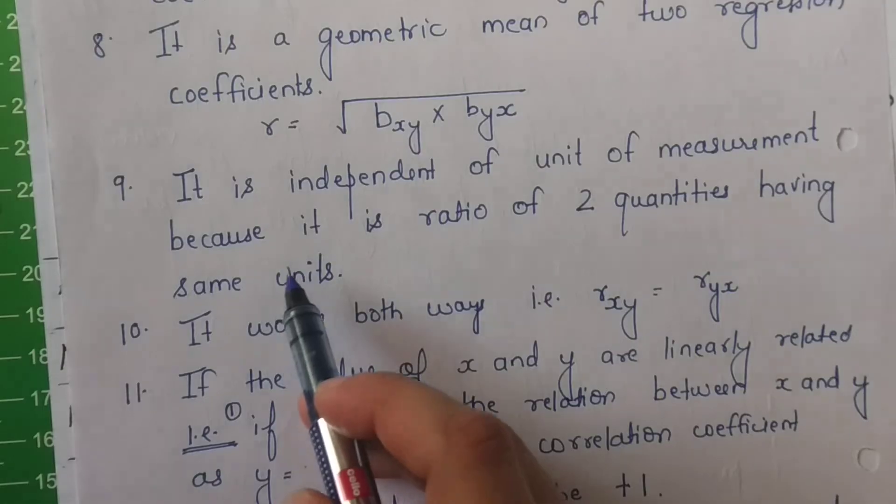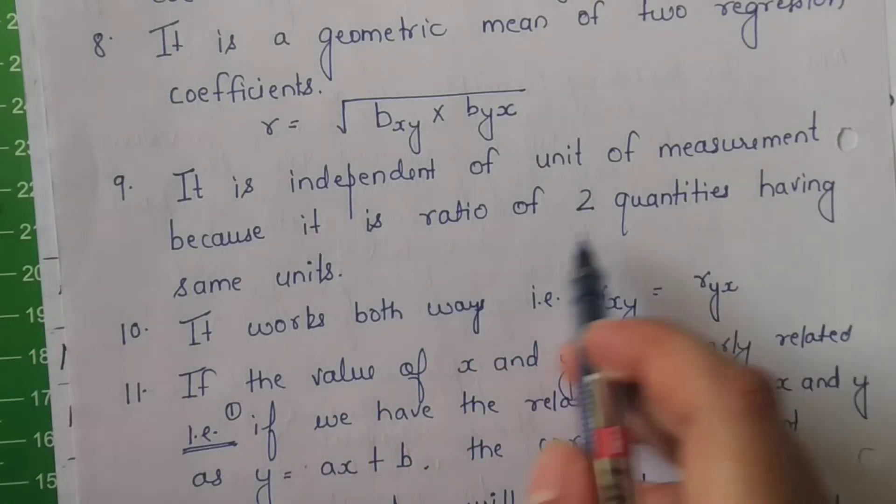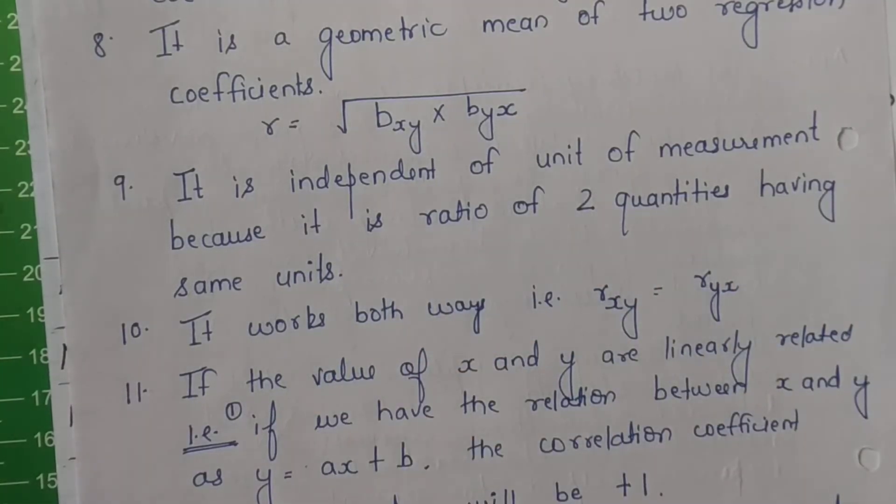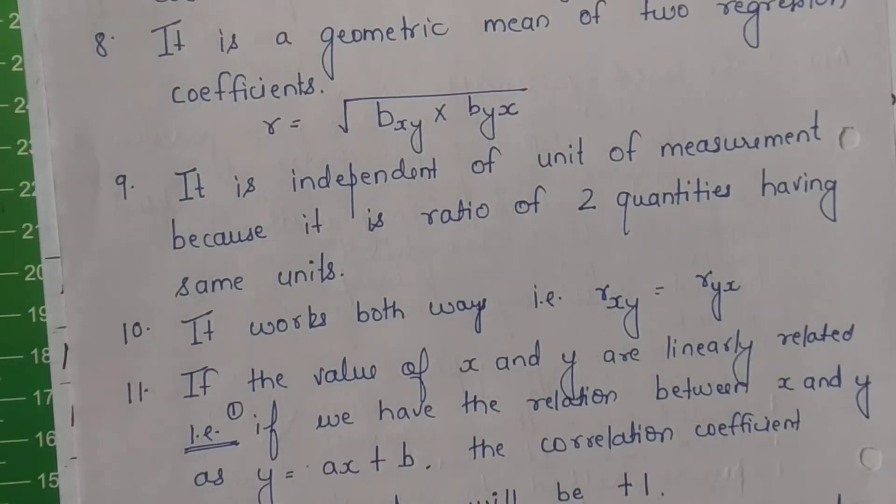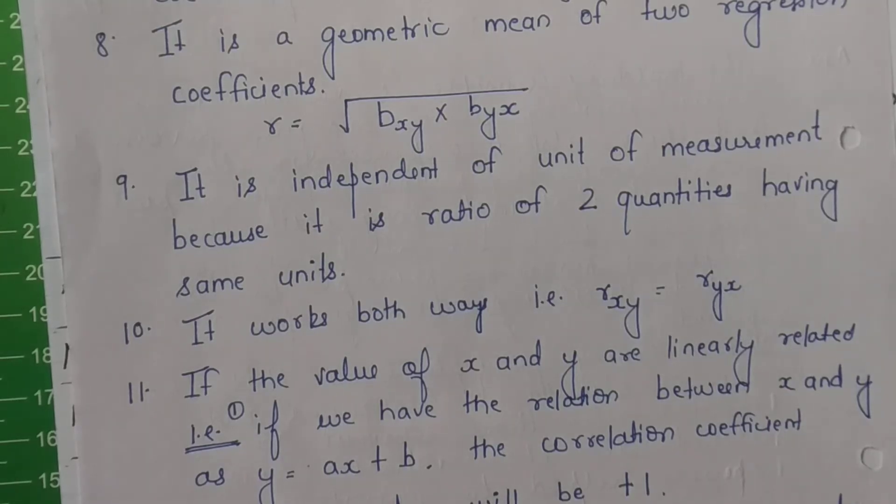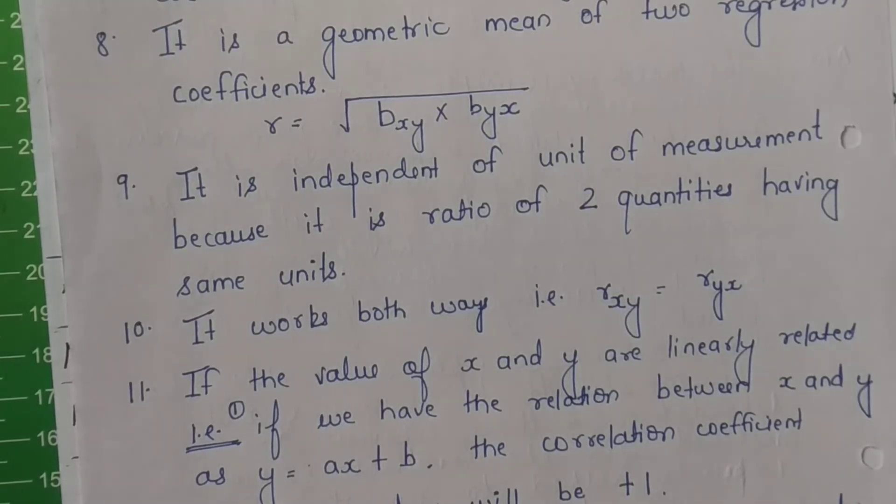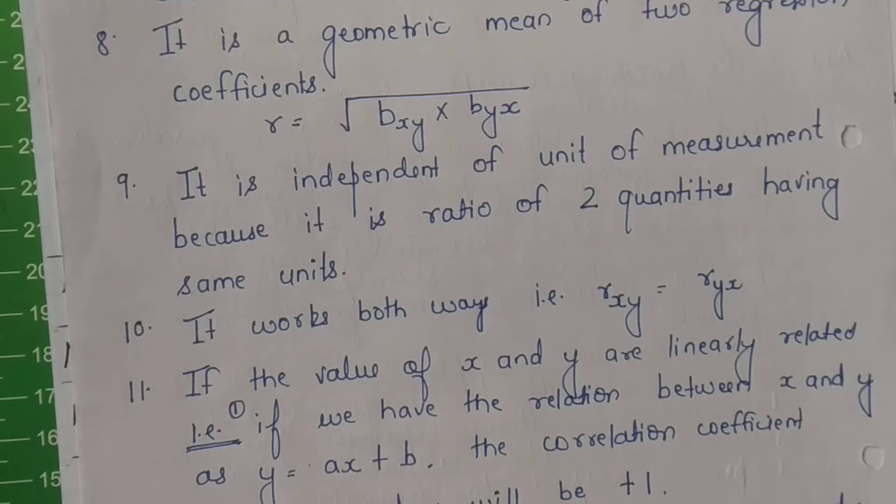It is independent of unit of measurement because it is a ratio of the two quantities having the same units. r jo hai, iska answer jo hai, aap sirf minus 1 se leke 1 tak ki range mein deti hain. Yeh ek simple ek figure hai. Yeh sirf aapko degree of relationship bata raha hai, intensity of relationship bata raha hai, strength bata raha hai.